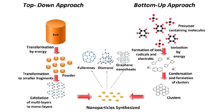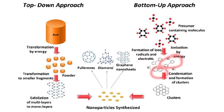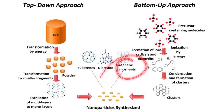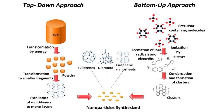In the bottom-up approach — and don't confuse this with direction, it refers to how we start things — we begin with precursor molecules and convert them into rings. These rings join together and are further condensed to form clusters, which are finally converted into nanoparticles in the form of graphene nanosheets, diamonds, fullerenes, etc.